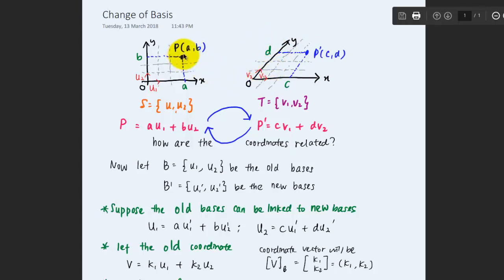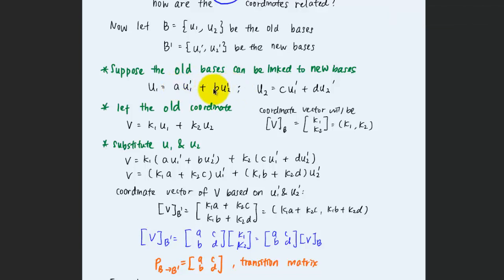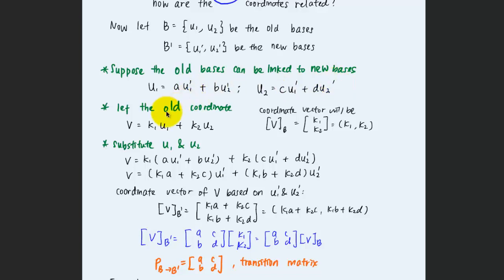We want to know the connection between the coordinate of a point in the B system and its coordinate in the B prime system. Suppose the old bases can be linked to the new bases such that the first old basis u1 is a combination a·u1' + b·u2', where a and b are unknown. Similarly, the second old basis u2 is a combination c·u1' + d·u2'. Let the coordinate vector of v equal k1·u1 + k2·u2, so the coordinate with respect to the old bases is (k1, k2).